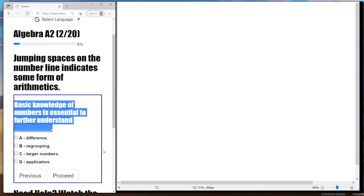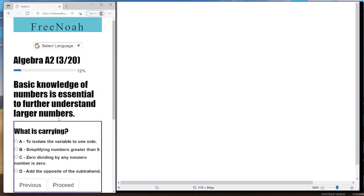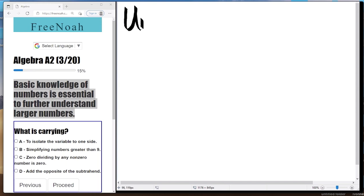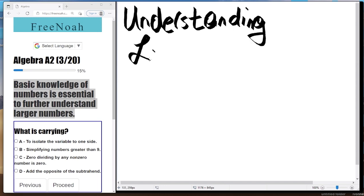Let's begin here. We're talking about basic knowledge of numbers, and it's essential to understanding larger numbers. So we have basic knowledge of numbers, and once we understand the infrastructure, the most basic components of numbers, we can understand bigger numbers, larger numbers, greater values.